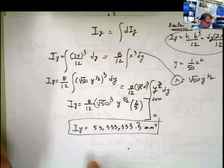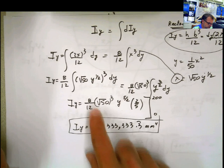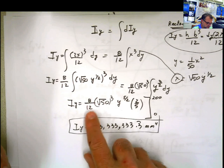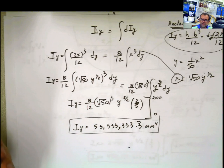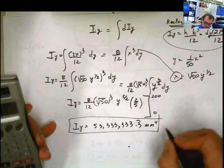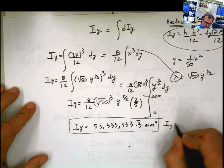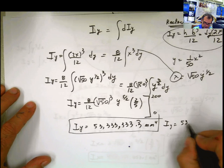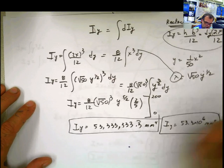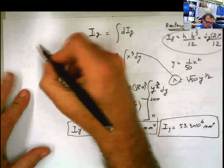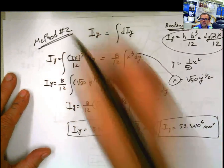That is the same result we got before. Same result as method one. You can express it as Iy equal 53.3 times 10 to the 6 millimeters to the 4, and you can call this method number 2. Which method do you use? The one that you know, the one you can handle, the one that is easier.